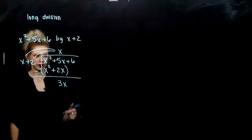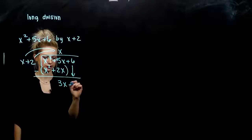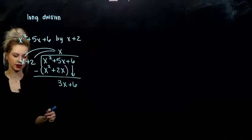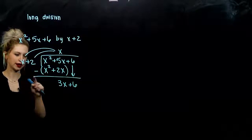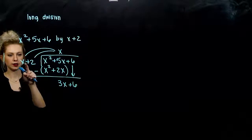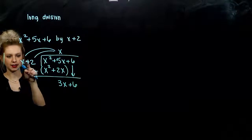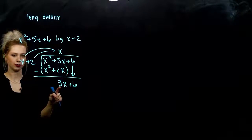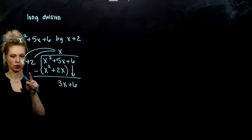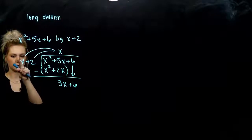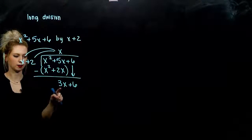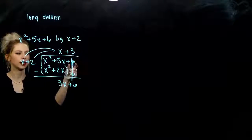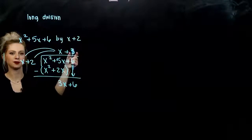Once we've done that, we want to bring down what's next — plus 6. And ask the same question, but now down here: what do I need to multiply x by to get me to 3x? What do I need to multiply this by to get me here? By 3. And again, write it above the constants.